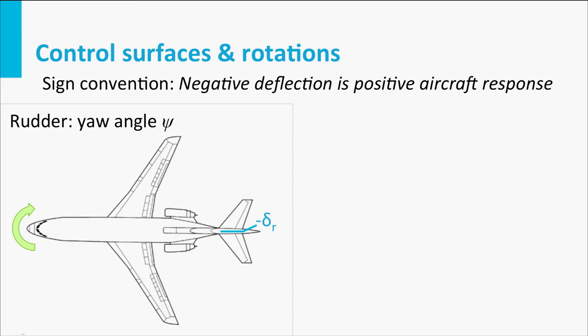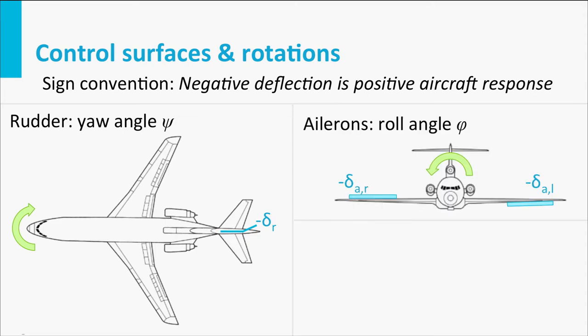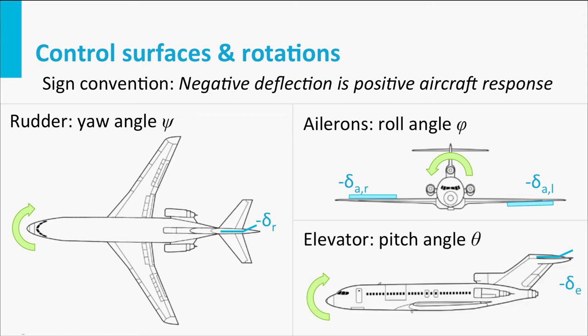That is the standard sign convention for these control surfaces: a negative extension results in a positive angle response. So the yawing angle psi is controlled with the rudder, which we call delta R. The roll angle uses the character phi — roll angle phi or bank angle phi — where a negative deflection of the aileron corresponds to a positive bank angle phi. And the elevator controls pitch angle theta; again, a negative extension of the elevator, minus delta E, results in a positive pitch angle theta.